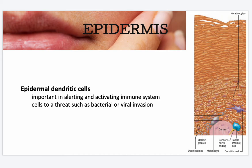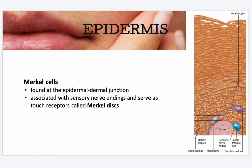Epidermal dendritic cells are important in alerting and activating the immune system cells to a threat such as bacterial or viral invasion — these are part of your immune system defense. Your Merkel cells are found in the epidermal-dermal junction, associated with sensory nerve endings, and serve as touch receptors called Merkel discs.